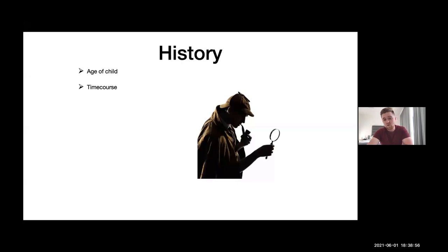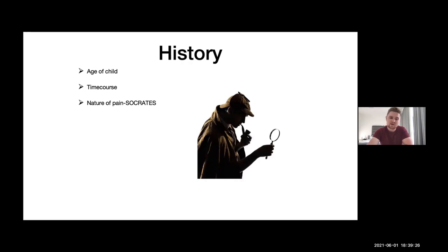It's important to know how long they've been limping, whether after trauma or whether the mum noticed them dragging their leg or indicating hip pain. Take a pain history using SOCRATES: site, onset, character, radiation, associated features, time course, exacerbating factors, and severity. These are particularly important in assessing a child with a limp, whether painful or non-painful.